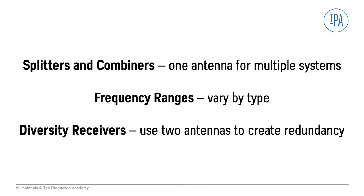In this video we looked at splitters and combiners, which use one antenna or one pair of antennas for diversity receivers. We then talked about frequency ranges of antennas, which do vary by type, and we discussed diversity receivers, which use two antennas to create redundancy.